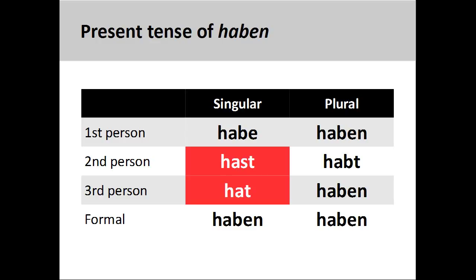For example, you will note that the verb stem for the irregular verb haben, meaning 'to have,' retains the consonant letter 'b' throughout most of the present tense conjugation pattern, with the exception of the second and third person singular, where the consonant is dropped.